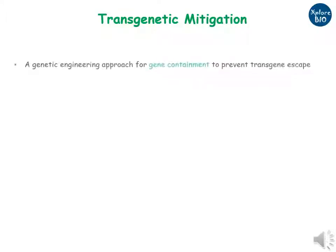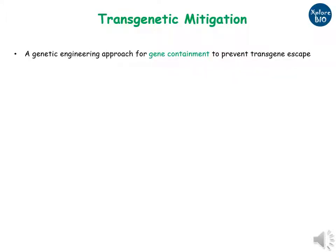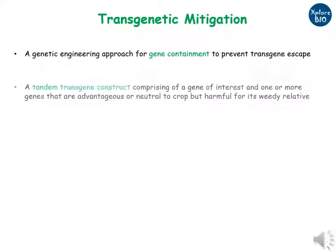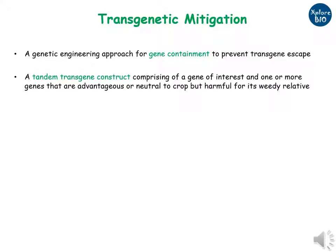Transgenic mitigation is a gene containment approach to prevent the spread of transgene from a transgenic crop to its weedy relative. In this approach, a special construct comprising a target gene and one or more tandemly arranged genes — advantageous or neutral to the crop but harmful to the weeds — is used.